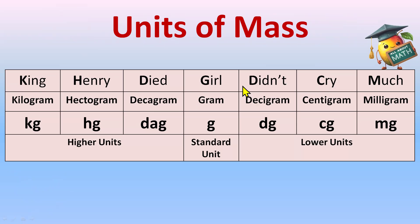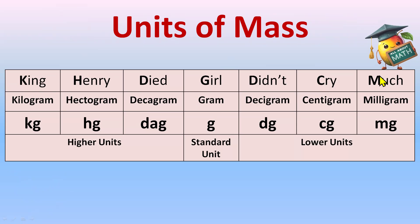King Henry died, girl didn't cry much. In mass there is 'girl' and in length it was 'mother' — so mother is for meters and girl is for grams. So: King Henry died, girl didn't cry much.